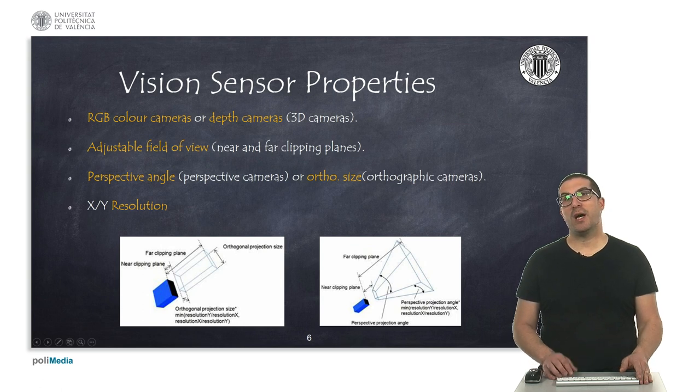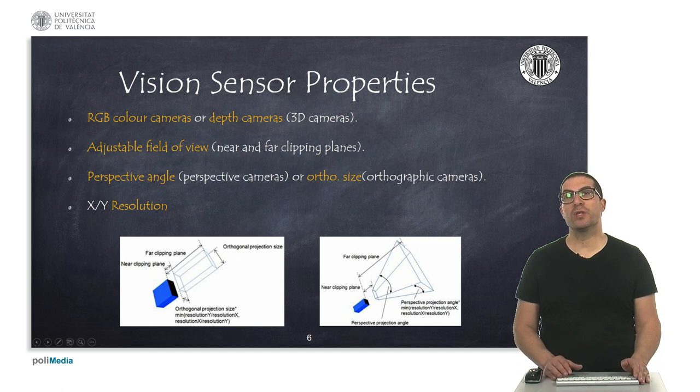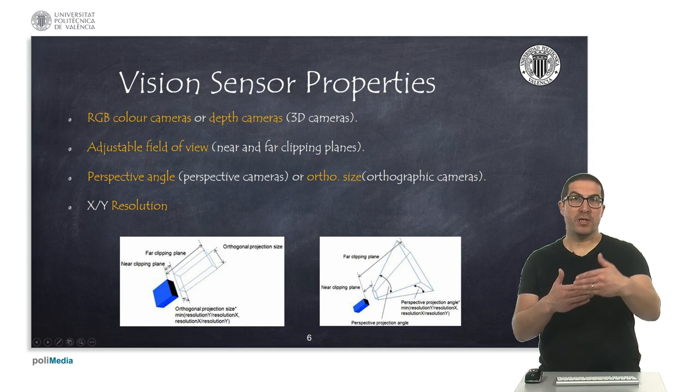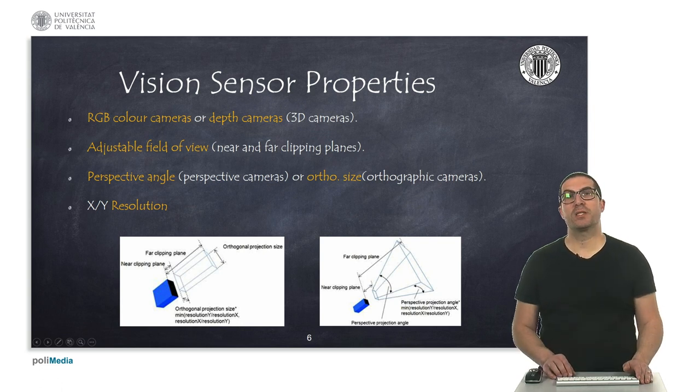Vision sensors can be used as standard RGB color cameras, or can also be used as 3D cameras, that is, they provide the depth or the distance to the objects on the scene.